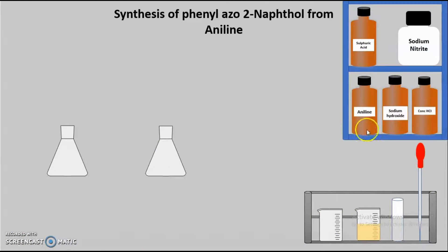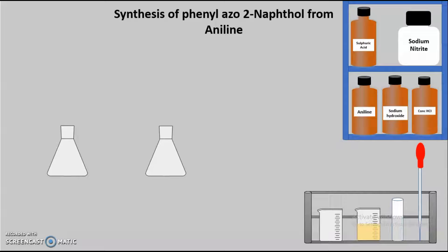Aniline, concentrated HCl, water, sodium nitrite, and sodium hydroxide are the chemicals required. We will also need containers like conical flasks, beakers, and a pipette. As per the procedure, first we take 2.5 ml of aniline, which is added to a mixture of 8 ml concentrated HCl and 8 ml water. Here you can see we have taken the aniline; with the help of a pipette, we are withdrawing 2.5 ml of aniline and adding it to a conical flask.